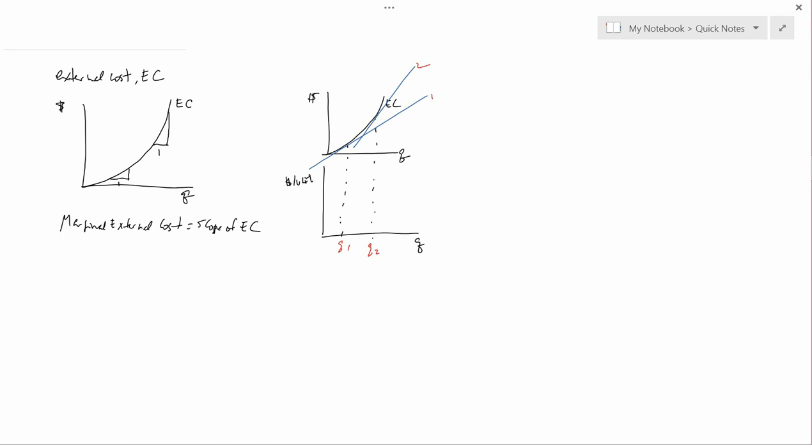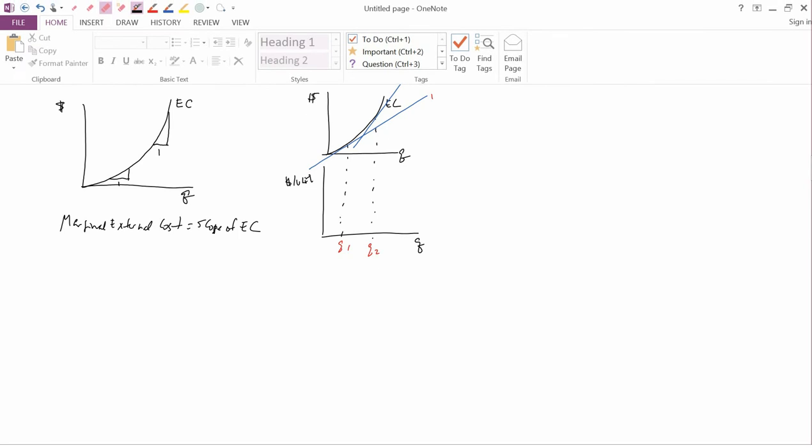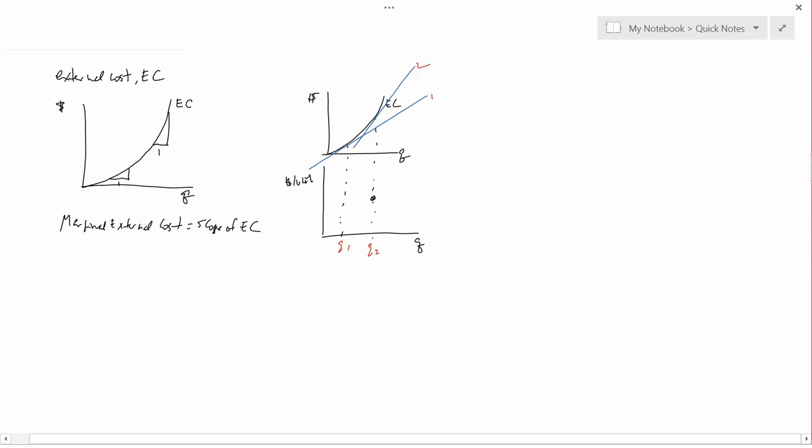Both of these have positive slopes because the blue lines are going up as you go from left to right. But two is steeper than one. And so whatever the marginal of the second one is, it's going to be bigger than the marginal of the first one.